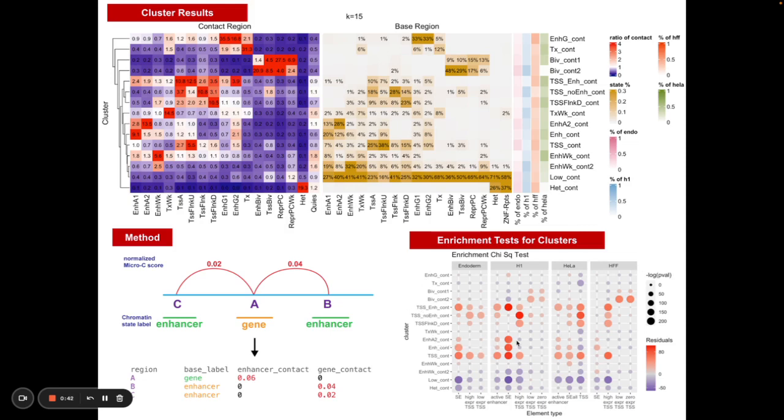One interesting result we see here is that super enhancers particularly are enriched for enhancer contacting clusters, as you would expect for super enhancers since they are defined as clusters of enhancers. Moreover, we see that high expressed genes are found in this transcription start site with less enhancer cluster. There's several more patterns. I encourage you to take a look at these figures and see what other interesting patterns you see here, and we hope to explore this further in the future.